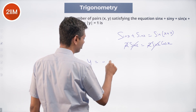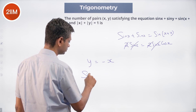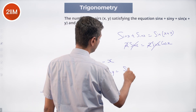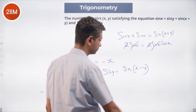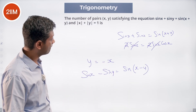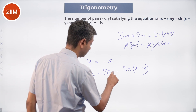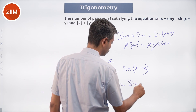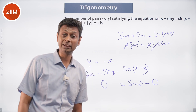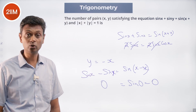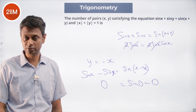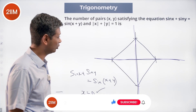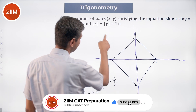Now put y equal to minus x. We get sine x plus sine(−x) equal to sine of x minus x, so sine x minus sine x equals sine 0, which is 0 equals 0. This is always true. So the entire line y equal to minus x, i.e., x plus y equal to 0, works for the equation sine x plus sine y equal to sine of x plus y.